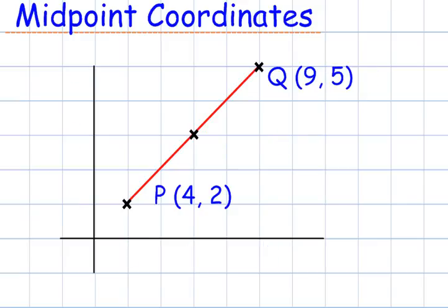In our second example, P is at 4, 2, and Q is at 9, 5.